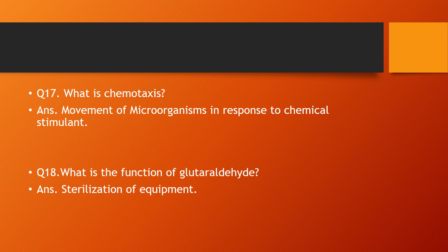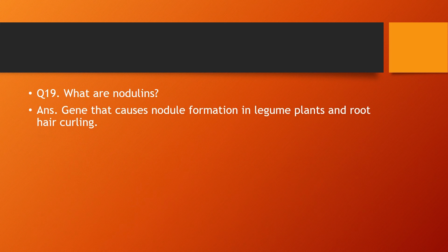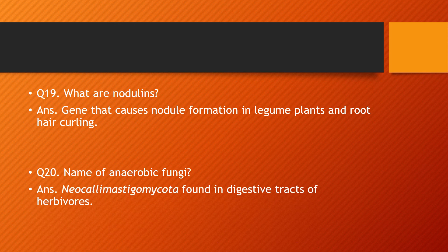Question number nineteen: what are nodulins? — the answer is genes that cause nodule formation in legume plants and root hair curling. Question number twenty: name of anaerobic fungi — the answer is Neocallimastigomycota, which is found in the digestive tract of herbivores.